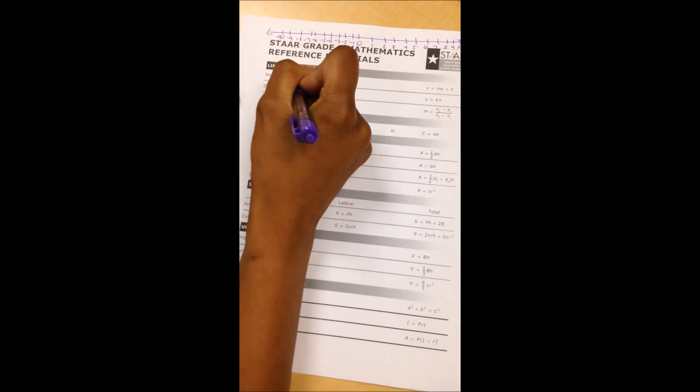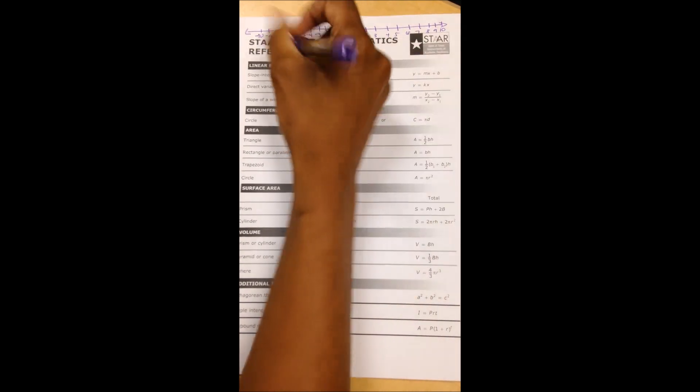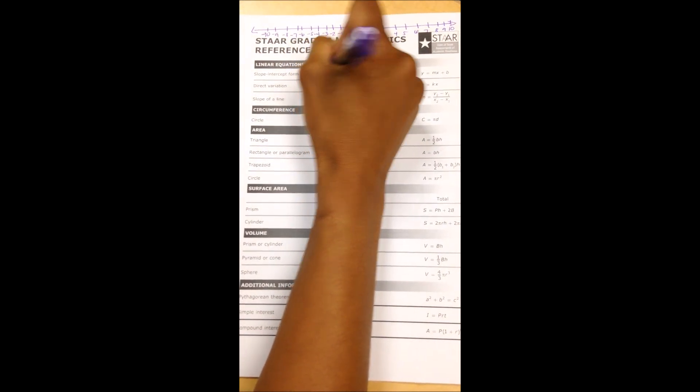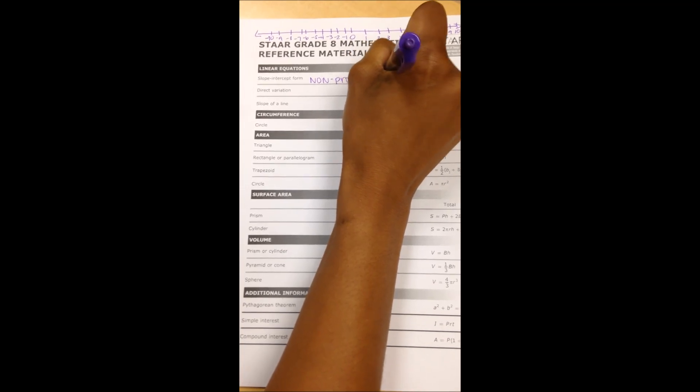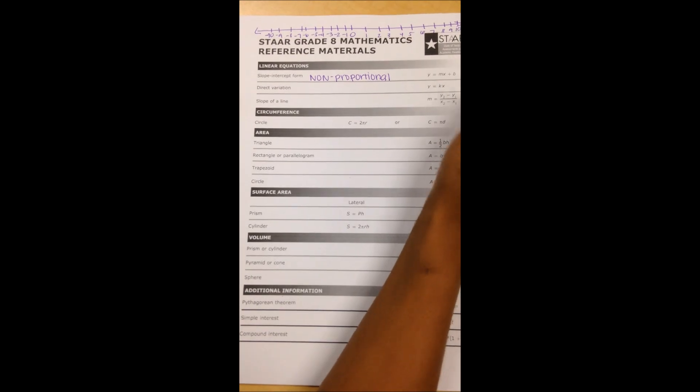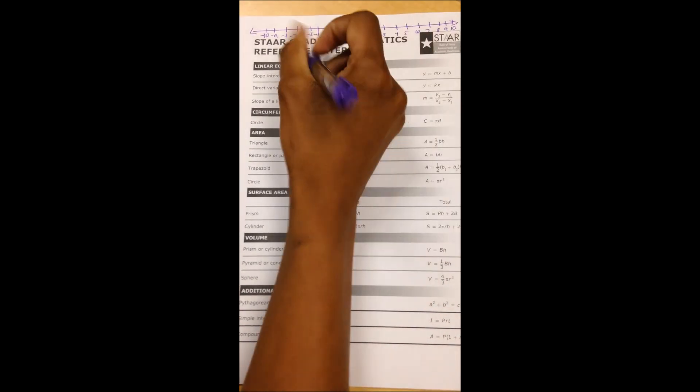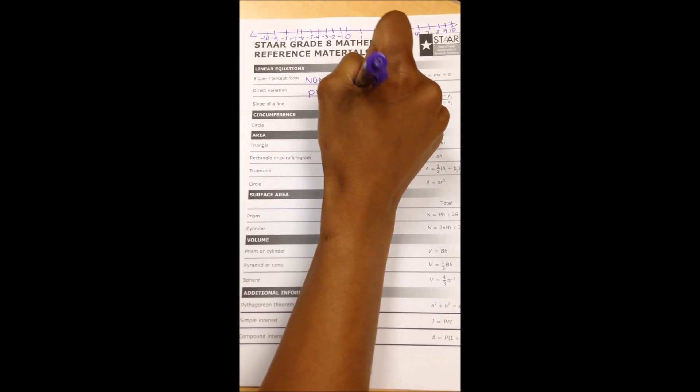Next, write slope-intercept form. Because y equals mx plus b represents a non-proportional relationship, label that non-proportional. And direct variation y equals kx, because there is no y-intercept, that is a proportional relationship, so label that as well.